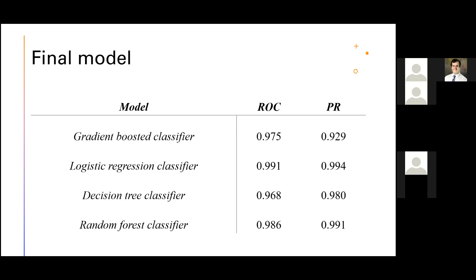We tried four models with cross-validation and grid search. After comparing these models, it is clear that logistic regression has the highest ROC and PR scores. However, all models fit well and the accuracy of each model doesn't differ significantly.